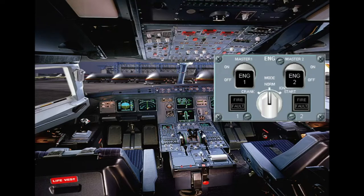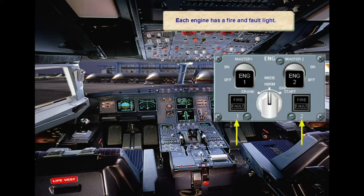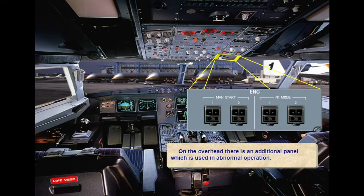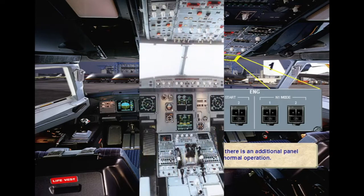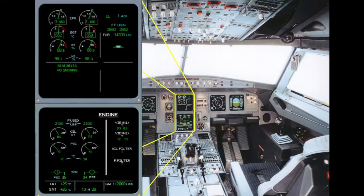Each engine has a fire and fault light. On the overhead, there is an additional panel which is used in abnormal operation. Engine indications are shown on the engine warning display and on the engine system display page.